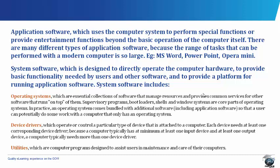The operating systems are essentially collections of software that manage resources and provide common services for other software that runs on top of them. Supervisory programs, bootloaders, shells, and window systems are core parts of operating systems. In practice, an operating system comes bundled with additional software, which includes application software, so that a user can potentially do some work with a computer that only has an operating system.